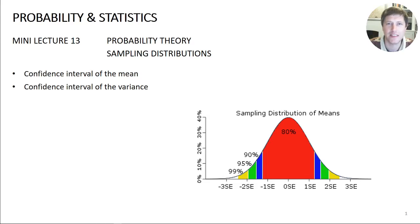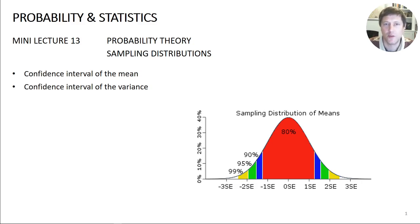Welcome to Mini Lecture 13. This time we're returning to the idea of sampling distributions and how we can infer the characteristics of the population that your sample came from. We started our whole lecture course on this probability and statistics part of the module, and now we're going to use what we've learnt so far to get more insight. We're covering two particular topics: the confidence interval of the mean and the confidence interval of the variance.